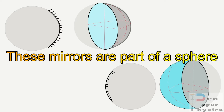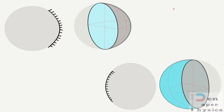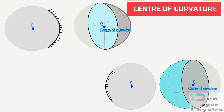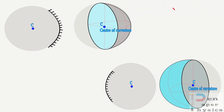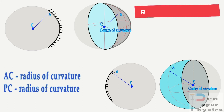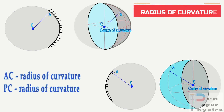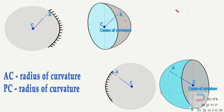Spherical mirrors are part of a hollow glass sphere. The center of that sphere from which the mirror is sliced is called the center of curvature. Remember, the center of curvature is an imaginary point and it lies outside the mirror. The radius of curvature is the radius of the sphere of which the spherical mirror is a part. It is also an imaginary line lying outside the mirror — AC and PC are both radii of curvature.